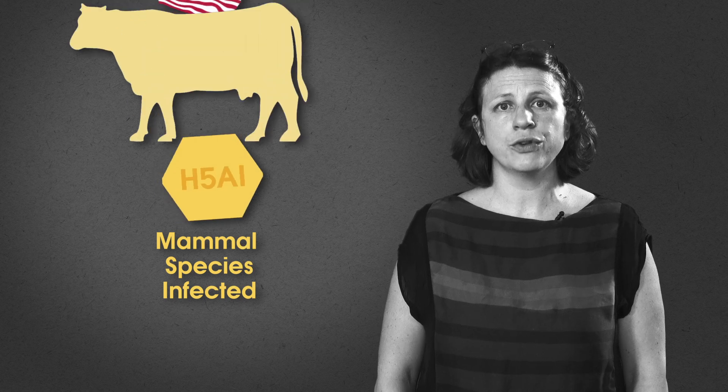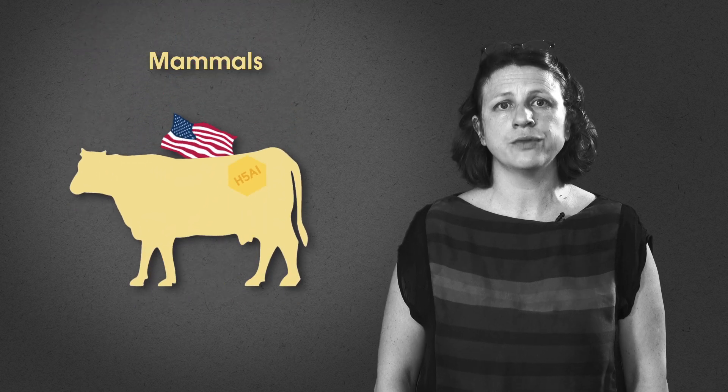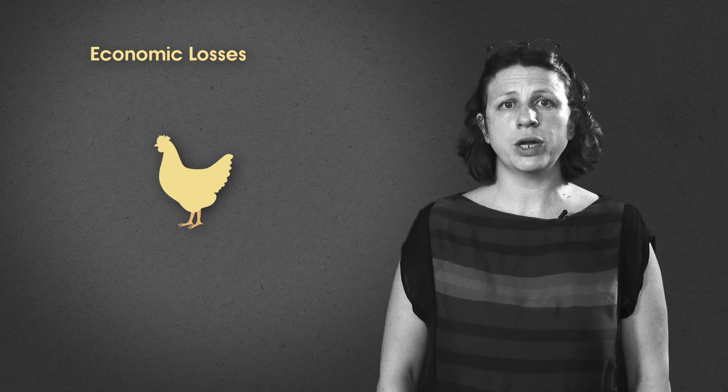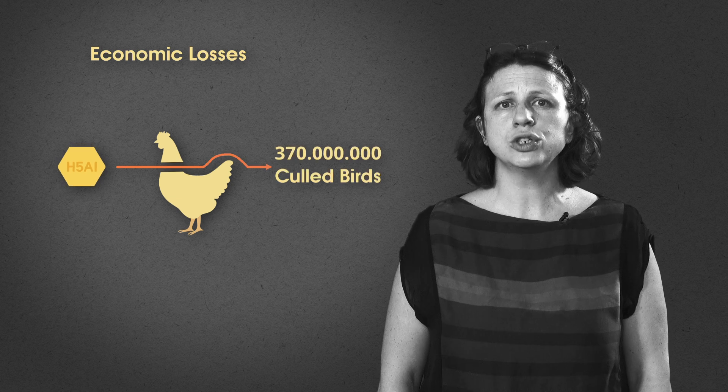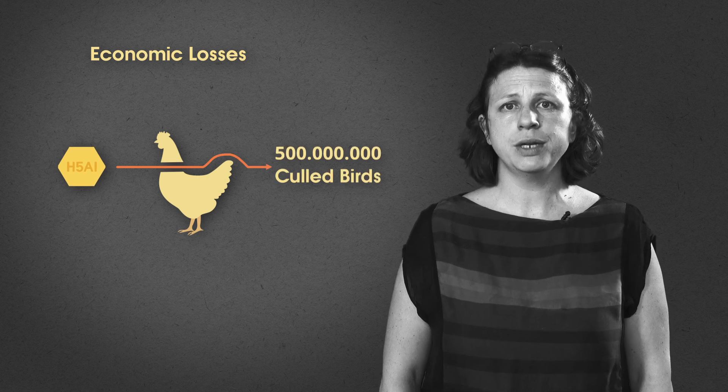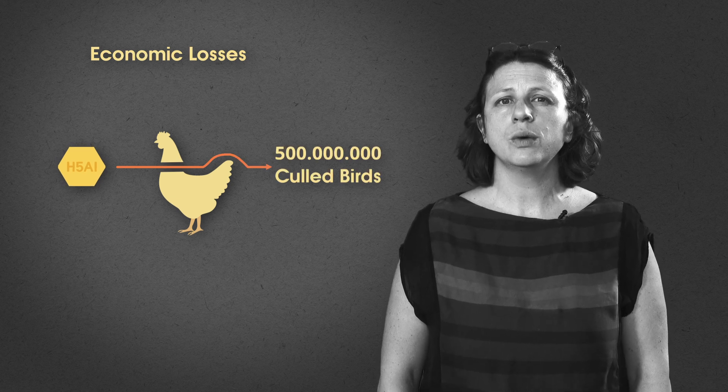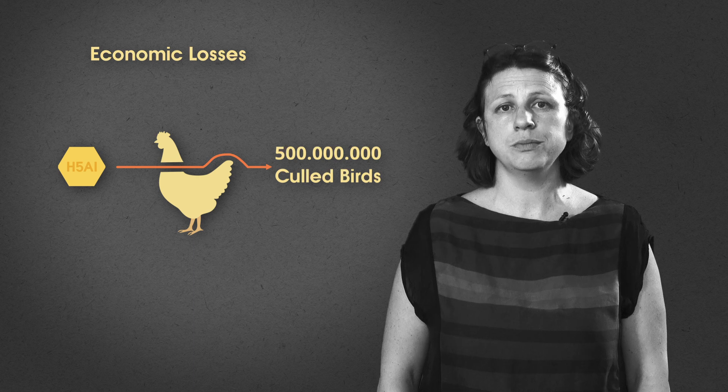The US has recently confirmed cases of H5 in dairy cows. The disease is also associated with huge economic losses through poultry death and the necessity to implement control measures in infected farms. Currently, the disease spread is controlled by culling all birds of an infected farm. Since the H5 strain emerged, over half a billion farmed birds have been slaughtered, with wild birds' deaths estimated in the millions.